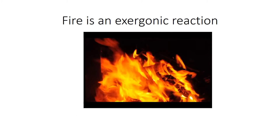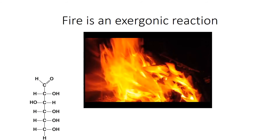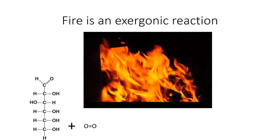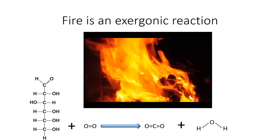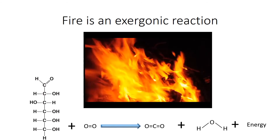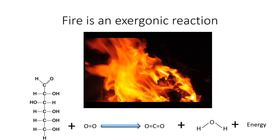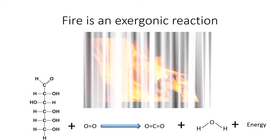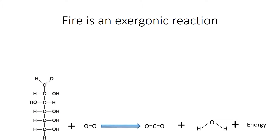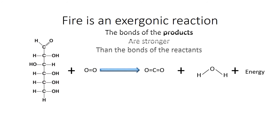Fire is an example of a chemical reaction that releases energy. Wood is mostly made up of cellulose, which is a polymer of glucose. We react that with oxygen in the atmosphere to get carbon dioxide, water, and a few other things. This is an exergonic reaction that also releases energy as heat to the environment. Why is fire or cellular respiration an exergonic reaction? The answer lies in the fact that the bonds of the products are stronger than the bonds of the reactants — the covalent bonds holding together carbon dioxide and water are much stronger than those holding together glucose and oxygen.